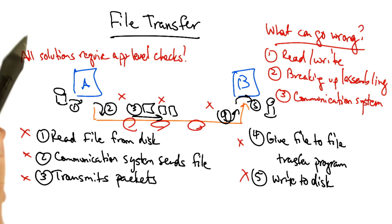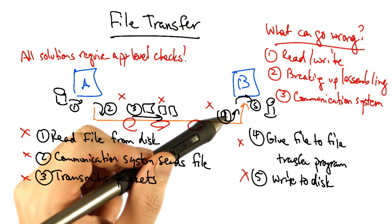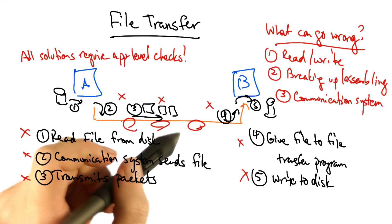Another possible solution is an end-to-end check and retry where the application commits or retries based on the checksum of the file. If errors along the way are rare, this will most likely finish on the first try.